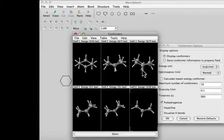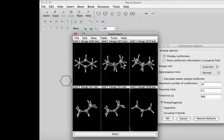You can also see that there's quite a bit of eclipsing, not perfect eclipsing, but quite a bit of eclipsing going on in these twist boat forms.